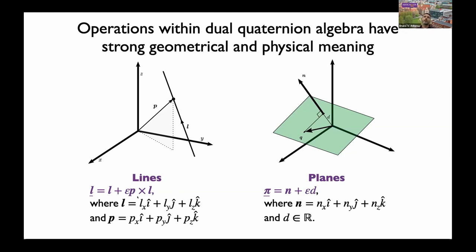The part multiplied by the dual unit contains the cross product between a point on the line and the line direction, which has the same geometrical meaning as the cross product between three-dimensional vectors. We can also represent planes — a plane in dual quaternion form is represented by the normal N, a pure quaternion, and D, a scalar defining the distance of the plane from the origin of the reference coordinate system.